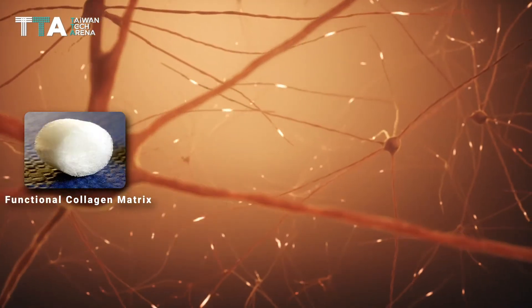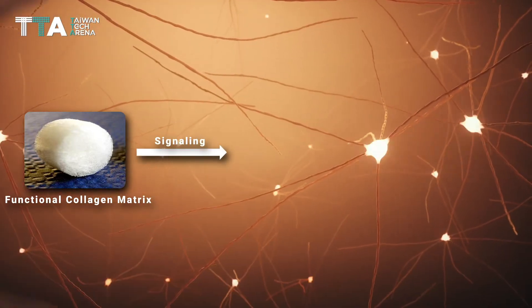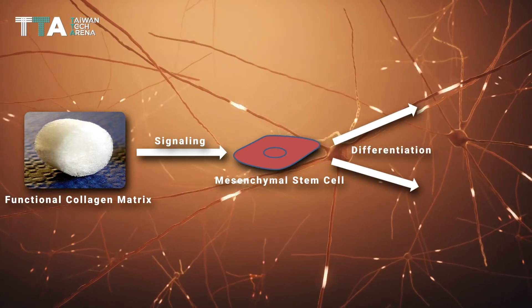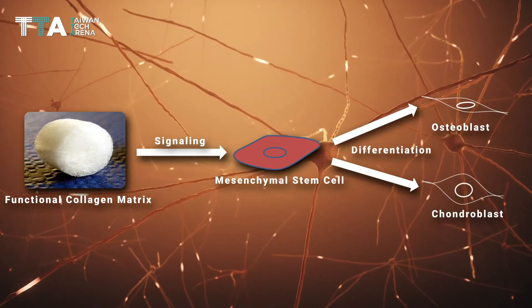The functional collagen matrix modification can signal bone marrow derived mesenchymal stem cells to enhance osteoblastic differentiation into osteoblasts and chondroblastic differentiation into chondroblasts.